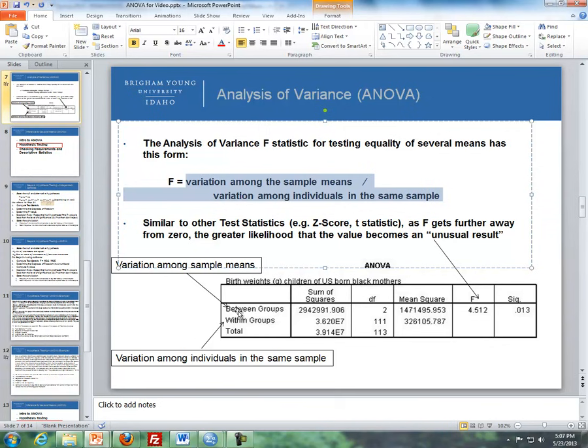The second row represents the variation among the individuals in the same sample. The between group is variation among sample means, and the within group is variation among individuals. These numbers here represent the sum of squares and mean square, which are measures of variability. You also see degrees of freedom. You'll be asked to list these two degrees of freedom for your analysis, the first one 2 and the second one 111 in this example.